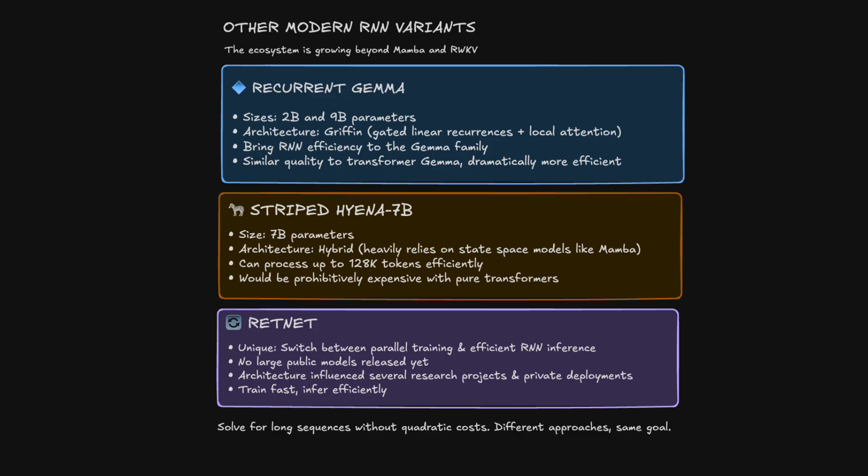The RWKV6 World models support over 100 languages and can handle context lengths of 32,000-plus tokens with linear scaling instead of quadratic. Recurrent Gemma from Google DeepMind brings efficiency to the Gemma family of models. The 2 billion and 9 billion parameter versions use Griffin Architecture, which combines gated linear recurrences with local attention. They achieve similar quality to transformer-based Gemma models while being dramatically more efficient for long sequences. Striped Hyena 7B from Together AI is a hybrid but heavily relies on state-space models similar to Mamba, and can process sequences up to 128k tokens efficiently — something that would be prohibitively expensive with pure transformers of similar size.